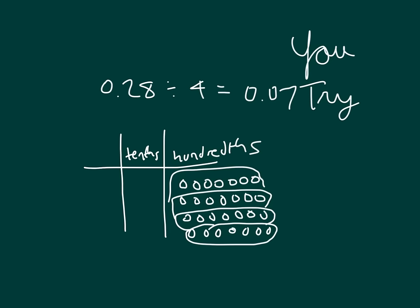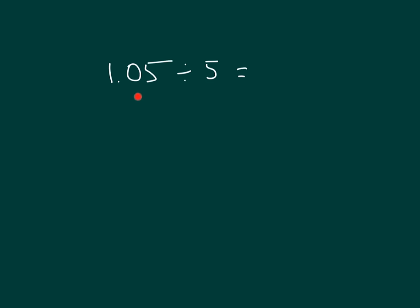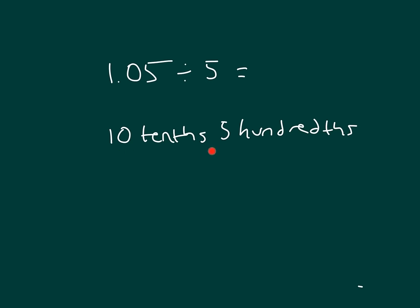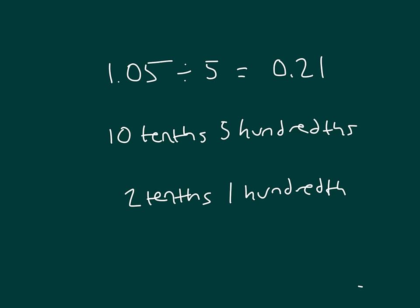Look over your work. I could read this problem as 105 hundredths divided by 5. Is there another way to read it? Could I say 10 tenths along with 5 hundredths? This unit form is most useful when we're dividing by 5. So 10 tenths divided by 5 equals 2 tenths, and 5 hundredths divided by 5 equals 1 hundredth. So when I write that out, it's 2 tenths with 1 hundredth. Our decomposition helps us divide because both of these are divisible by 5 easily.